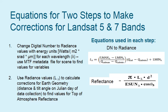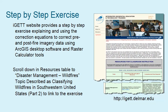In step two, you take the radiance values calculated in step one and use another equation that accounts for the Earth's orbit — the distance between the Earth and the Sun, as well as the angle of tilt of the Earth's axis on the day the data was collected. This is a rather complex step, and you can find an exercise on the IGET web page.